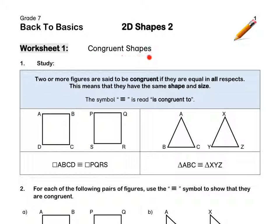Congruent shapes. Two or more figures are said to be congruent if they are equal in all respects. This means that they have the same shape and the same size.